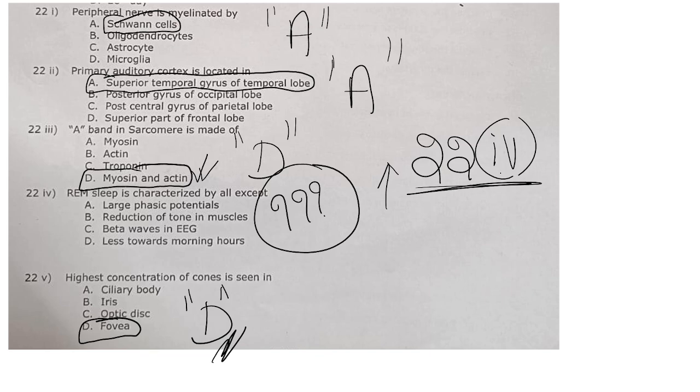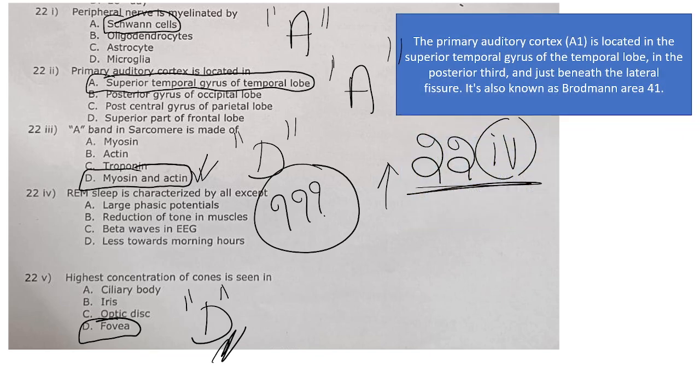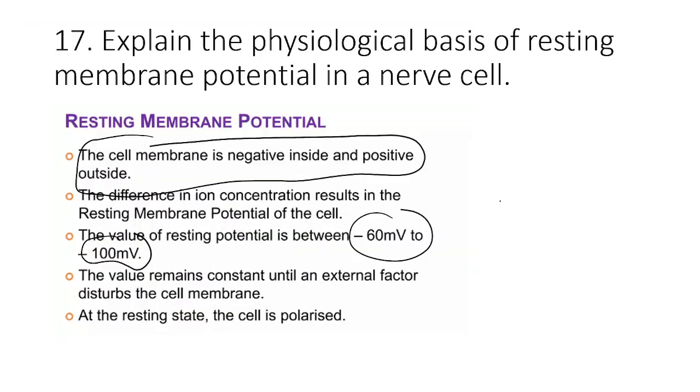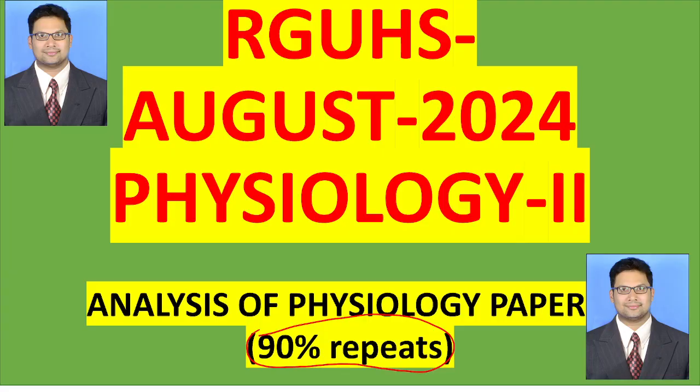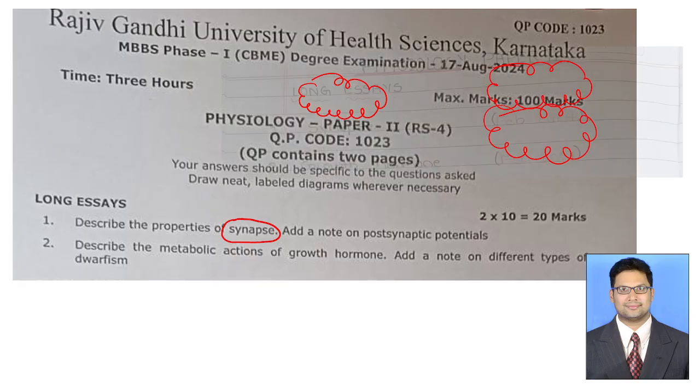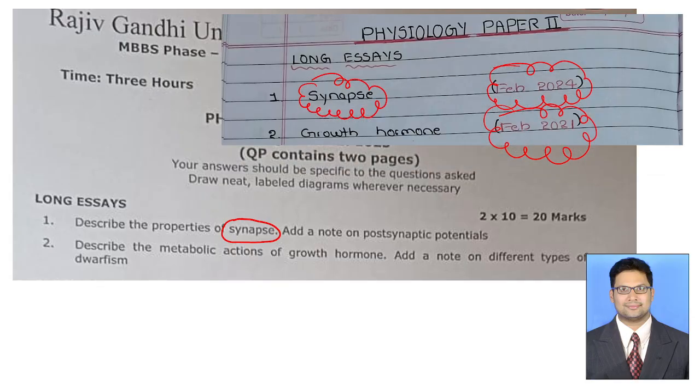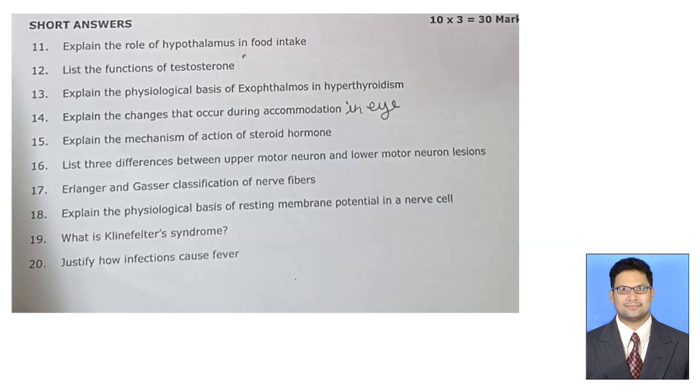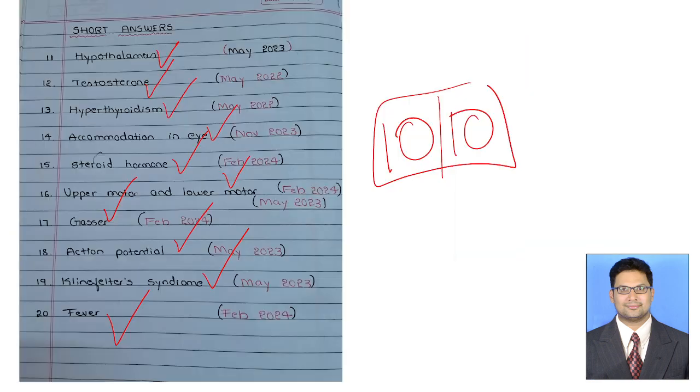The number of repeats in your paper is around more than 90 percent repeats. What you can see here in this paper, both the main questions are repeats - synapse and growth hormone. Almost 7 out of 8 repeats in short essays. Almost all 10 are repeats from previous papers. So the percentage of repeats is 90 percent.